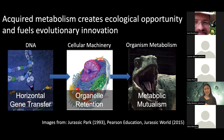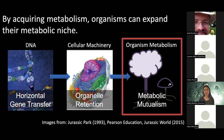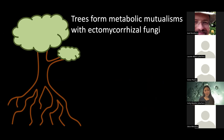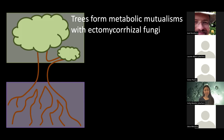In our group at UCSB, we're interested in understanding how acquired metabolism creates contemporary ecological opportunity and enables evolutionary innovation. I'd like to share a couple of vignettes from our work, starting at the level of the whole organism thinking about metabolic mutualism. We work on the metabolic mutualism between trees and ectomycorrhizal fungi — what I think is an equally charismatic and contemporarily ecologically important system.